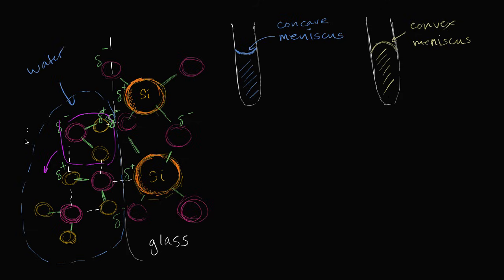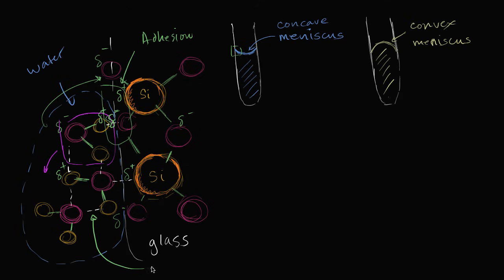So these things just keep bumping around. Maybe another water molecule gets knocked in the right way and sticks to the glass. This phenomenon of something sticking to its container we would call adhesion. And when you talk about something sticking to itself, we call that cohesion — and that's what the hydrogen bonds are doing inside the water.